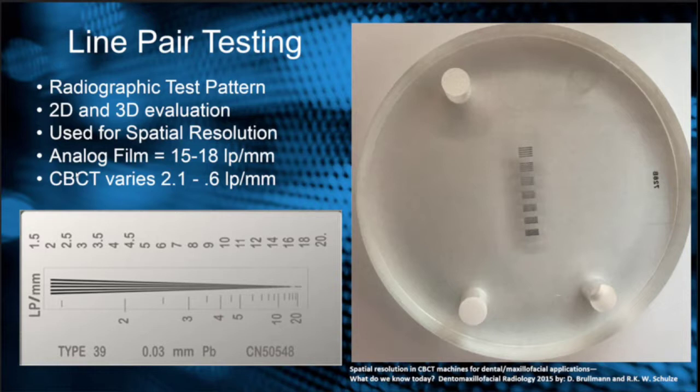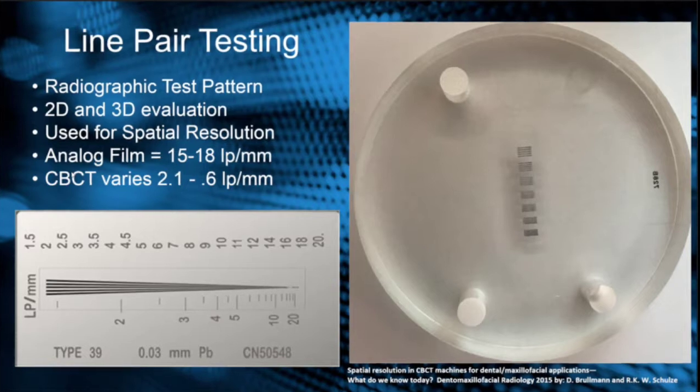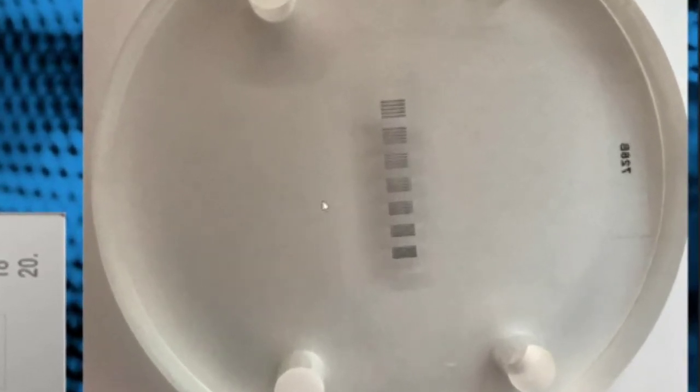Cone beam CT is going to be much lower than that. It's going to vary anywhere from about 2 to maybe half a line pair per millimeter. You can test your machine by using a line pair tester such as this circular one here.